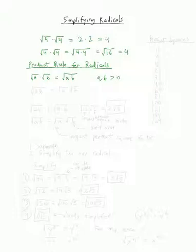Now, for simplifying radicals, we're not going to focus on using the rule going this direction — that's going to be in the multiplying radicals section. What we're going to focus on is the backwards version of this rule. In other words, the square root of a times b equals the square root of a times the square root of b — going from right to left instead of left to right.